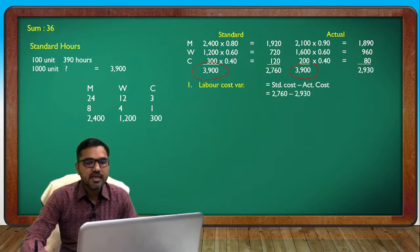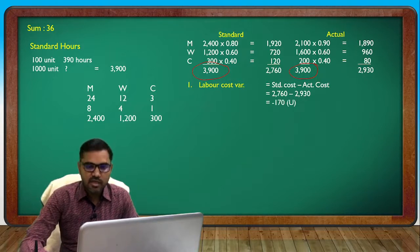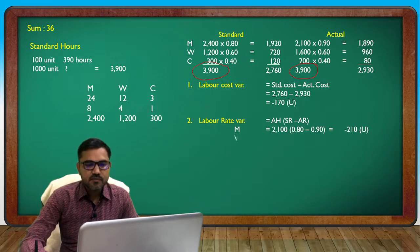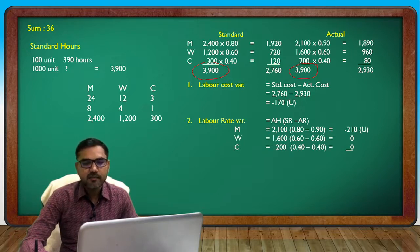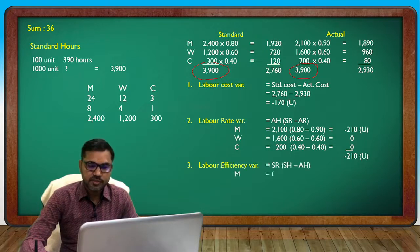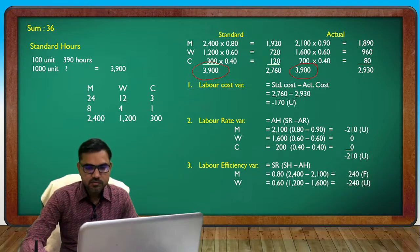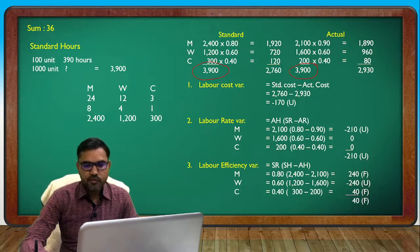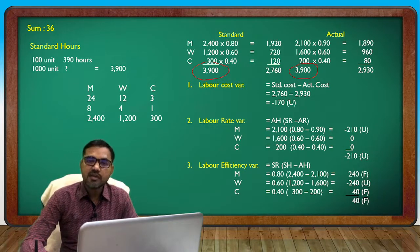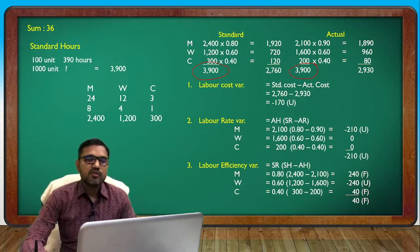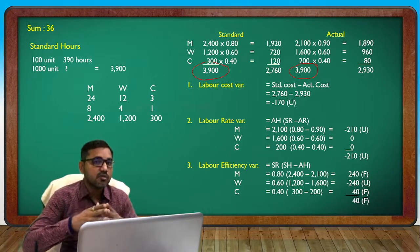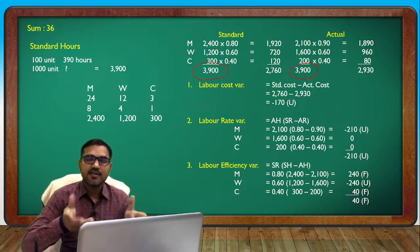With the income tax trade: labor cost variance is minus 170 unfavorable, minus 210 for rate. Efficiency variance: plus 40 plus 210 minus 170 — verification complete. Mix: because efficiency is equal to mix, no need to calculate Revised Standard Mix separately.